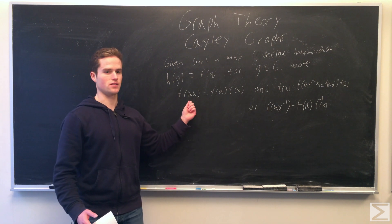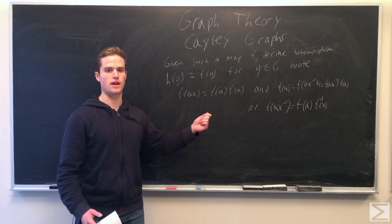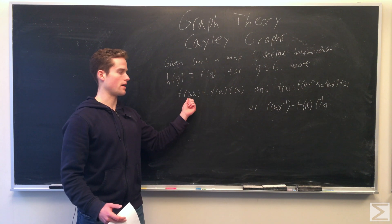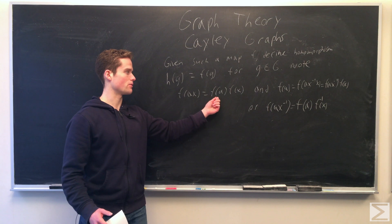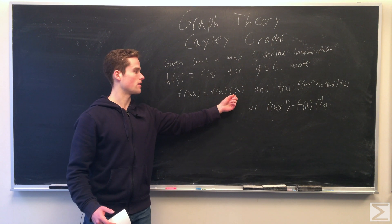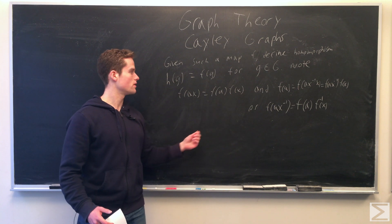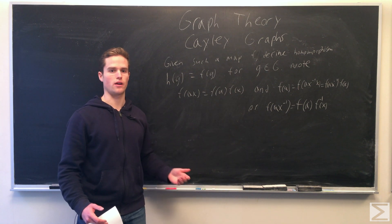But this is true just because A goes to AX by edge X. It preserves incidence, color, direction. So then F of A, X must be wherever F of A gets sent to, and then wherever the edge F of X corresponds to in our new graph.